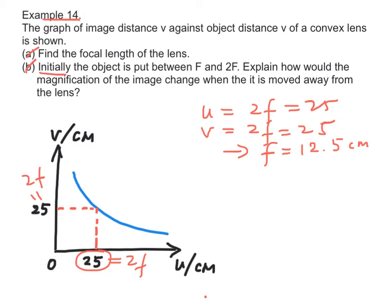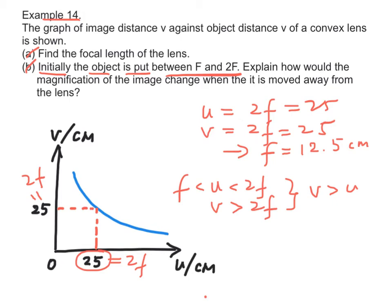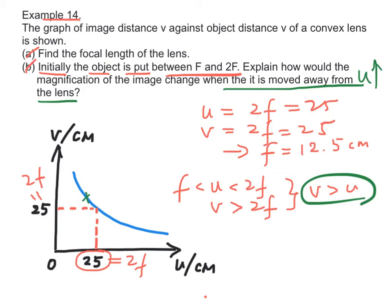Part B: If initially the object is placed between f and 2f — meaning the object distance lies between f and 2f — the image will be magnified and the image distance v will be larger than 2f, meaning v is larger than u. When the object is moved away from the lens, u increases. From the graph, when u increases, v decreases. That means the magnification m = v/u will decrease.